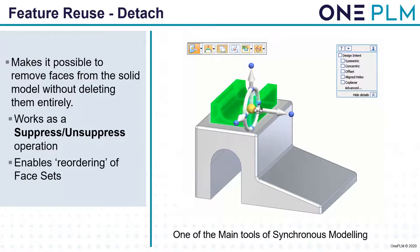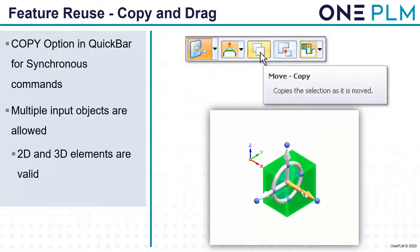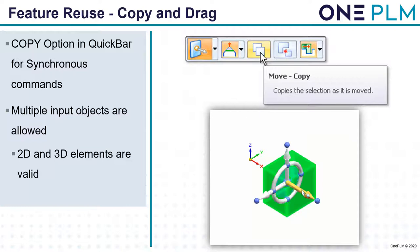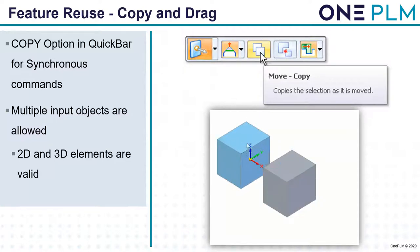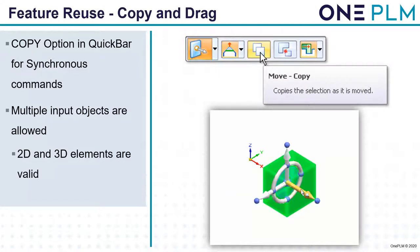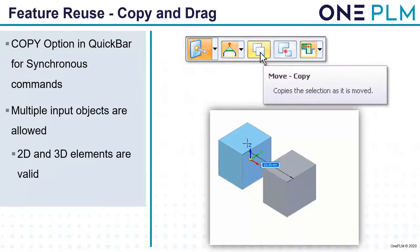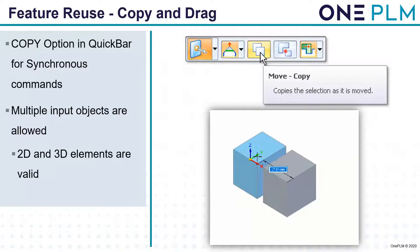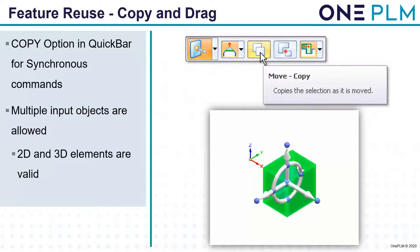Feature reuse — copy and drag: a very useful tool. We have a copy option on the quick bar, or we can press control while dragging. We can select multiple input objects including sketches, planes, protrusions, faces, and features, and copy and paste those. This allows us to make one or two copies very quickly without using the paste command.